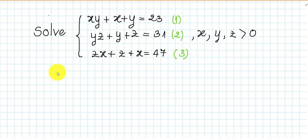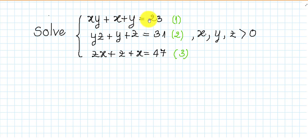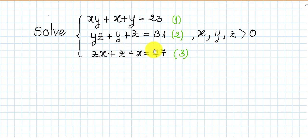Hello everyone, welcome to Education Key Internet. Today I have one exercise like on screen. The system of equations is: xy plus x plus y equals 23, yz plus y plus z equals 31, and xz plus z plus x equals 47, where x, y, and z are positive numbers.